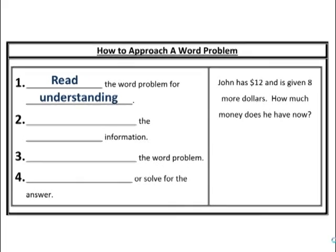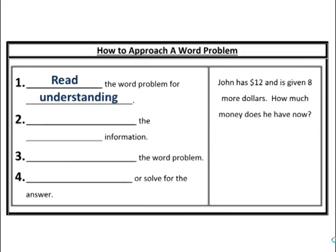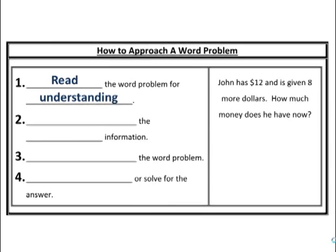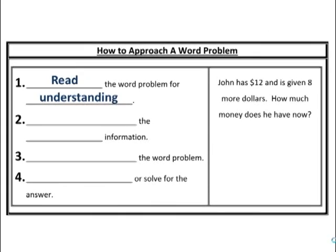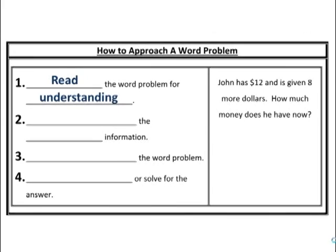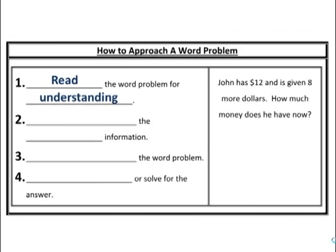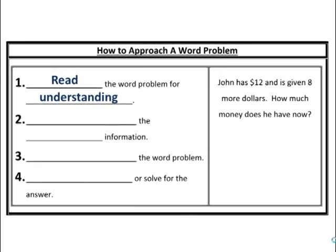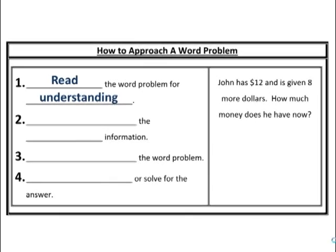Think about it like English class. In order to understand the plot, you retell the story — you analyze the story to find the plot and how the characters are related. It's the same thing for a word problem. In order to find the operation being described, you need to understand the story. Retell it to yourself in your own words. Forget the numbers for a moment: John has money, he's given more money — how much does he have? To me, that sounds like addition.